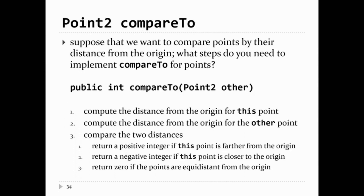Suppose we want to compare points using their distance to the origin. So what steps do you need to compare two points via x.compareTo(y)? I need to compute the distance that x is from the origin, compute the distance that y is from the origin, and then compare the two distances. We return a positive integer if this point is farther from the origin than the other point, a negative integer if this point is closer, and zero if the points are equidistant from the origin. Notice we're not returning zero if the two points are equal — we return zero if they have the same distance from the origin.